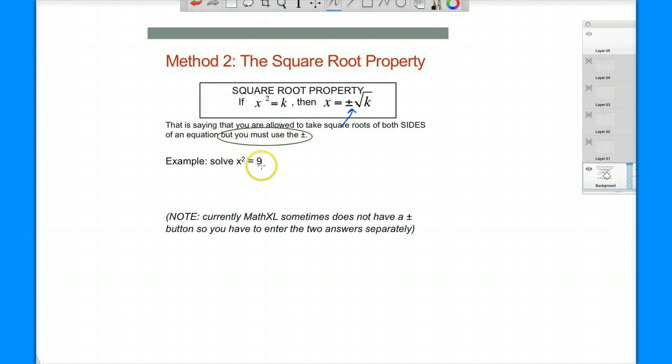In other words, if we have x squared equals 9, this property says basically you can take square roots of both sides. So basically the square root of the left side equals plus or minus, don't forget the plus or minus, square root of the right side. So square root of x squared is just plain x. Square root of 9 is 3.